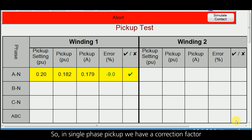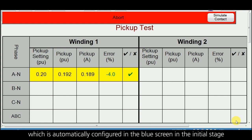Once I click it moves to the next timing test, followed by the pickup test for both windings. In single-phase pickup we have a correction factor which is automatically configured in the blue screen in the initial stage.